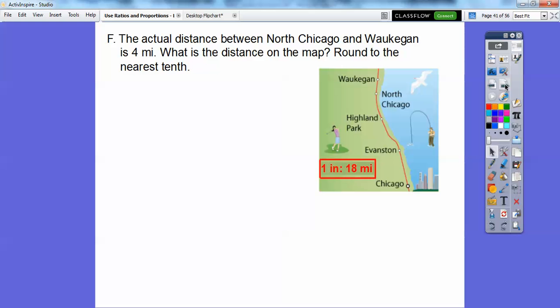The actual distance between North Chicago, here's North Chicago up here, and, golly, I can't even pronounce that, Waukegan is four miles, okay? So that's the actual distance right there. What is the distance on the map? Round to the nearest tenth, okay? We're going to use this same ratio, one to eighteen.